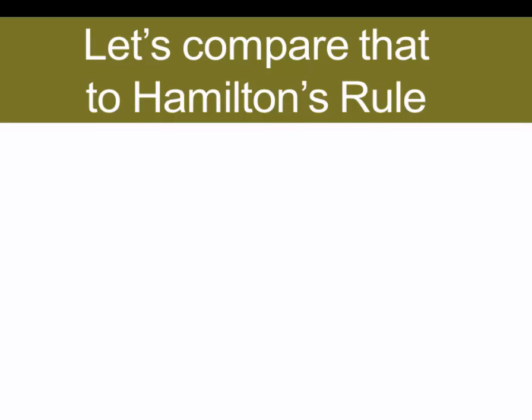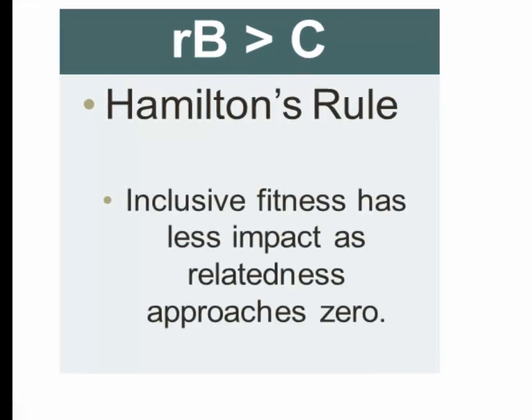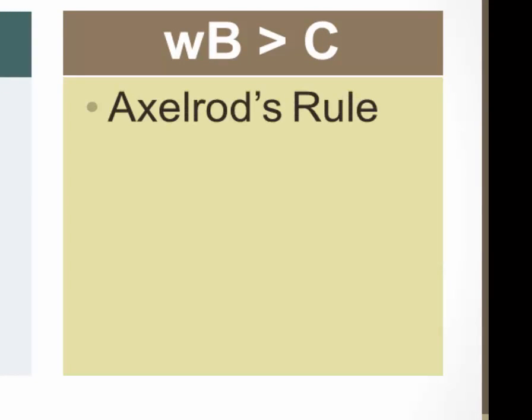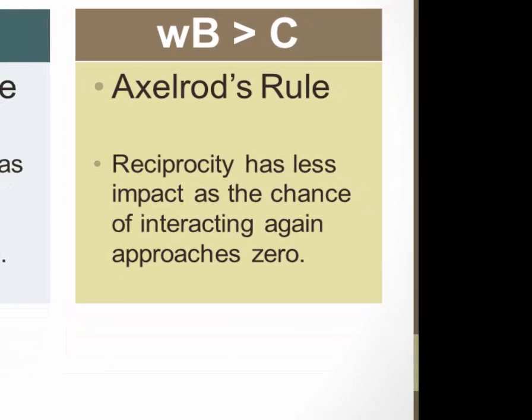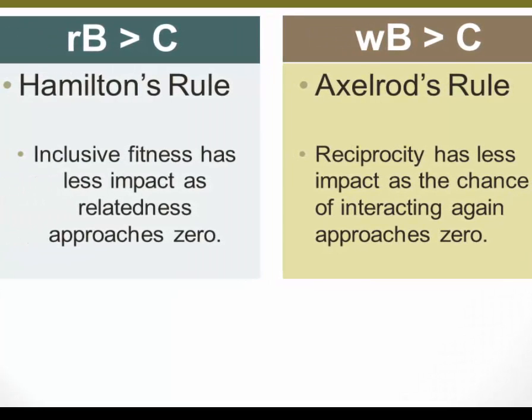Let's compare that finding to Hamilton's rule. We found with Hamilton's rule that inclusive fitness had less impact as relatedness approached 0. We said that as relatedness approached 0, inclusive fitness is very hard to calculate in a meaningful manner. Similarly, with Axelrod's rule, as the probability of meeting again approaches 0, reciprocity will have less impact on the actor's behavior. So again, both of these models are operating in parallel. As relatedness or the probability of interacting again gets smaller, the significance of inclusive fitness or reciprocity also become less.